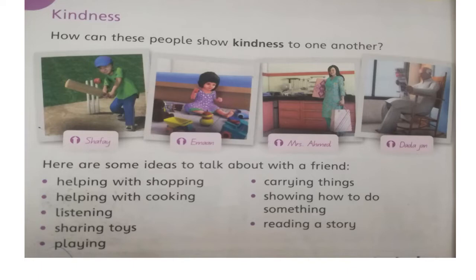Here are some characters: Shafi, Iman, Mrs. Ahmed, and Dadajan — such characters you people have at your home. Here are some ideas to talk about with a friend, like how you people can show kindness to one another with your relations — your friends, your siblings, your parents, or your elders. The points are: helping with shopping, helping with cooking, listening, sharing toys, playing, carrying things, showing how to do something, and reading a story.